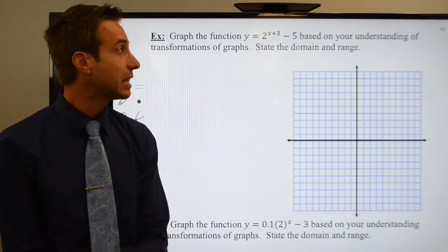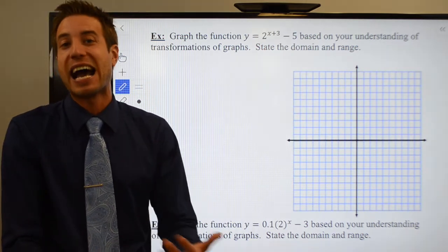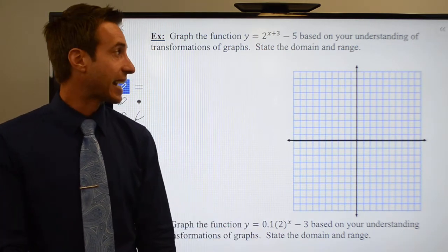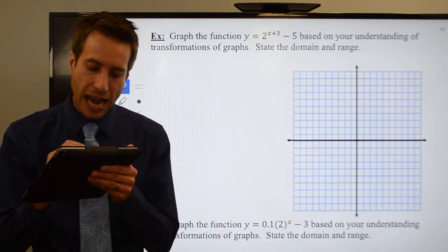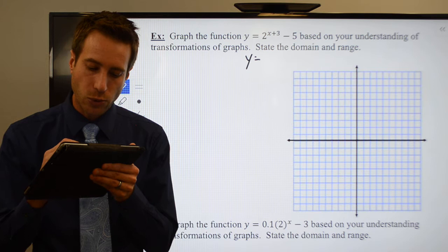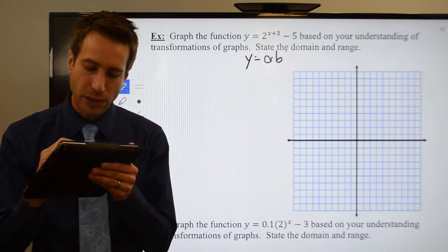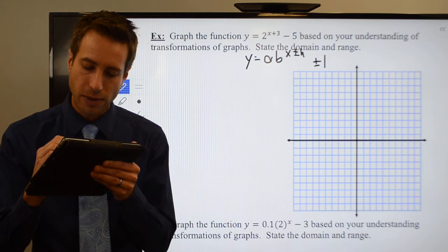But we are dealing with transformations here because I have values for a, h, and k. Let's jump right into this example problem. My general form is y equals a times b raised to the x plus or minus h plus or minus k.